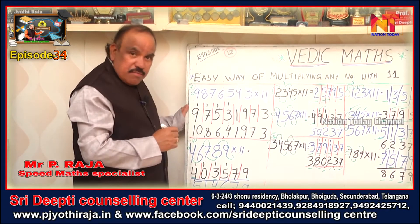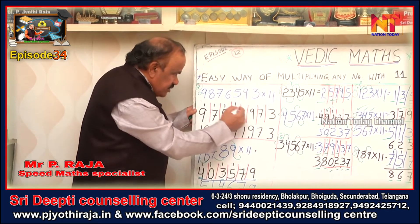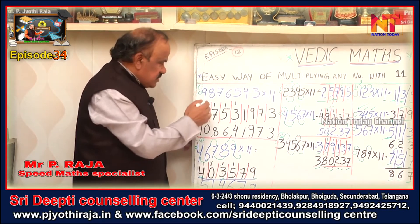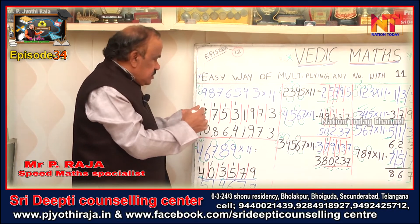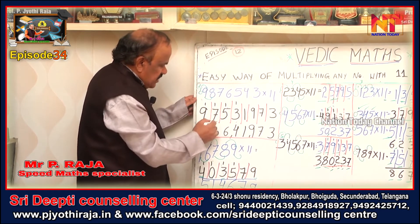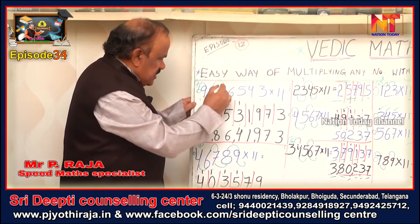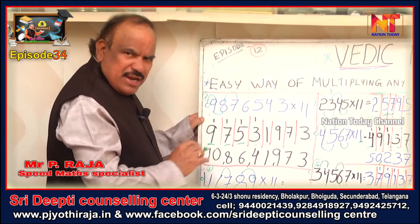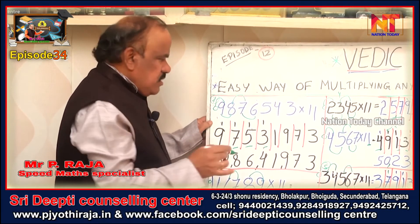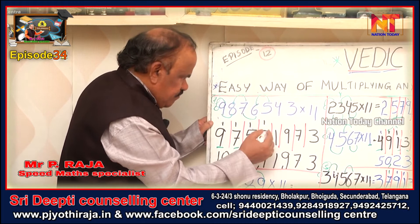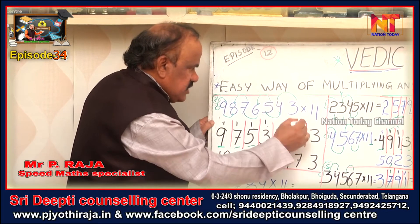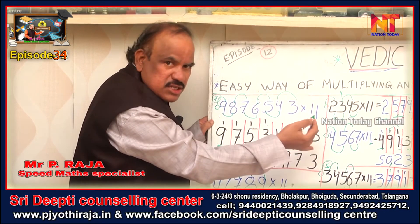I am putting zero here in the mind. These are the steps we are doing for understanding purposes. When you become perfect, you need not do it here. So: zero plus nine is nine; nine plus eight is seventeen, carry one; eight plus seven is fifteen, carry one. Seven plus six is thirteen, putting one; six plus five is eleven, putting one; five plus four is nine; four plus three is seven; three plus nothing is three.